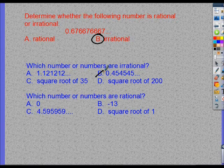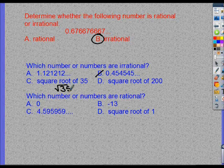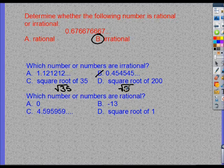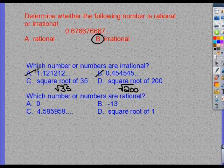We have the square root of 35 and the square root of 200. And we can eliminate this one right here because it goes 1, 2, 1, 2, 1, 2. All right? So,